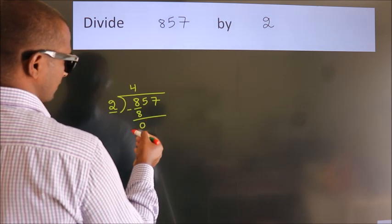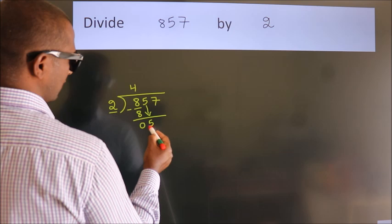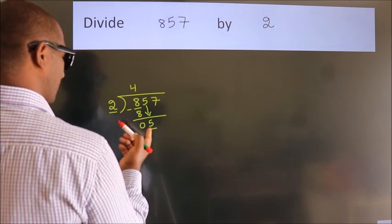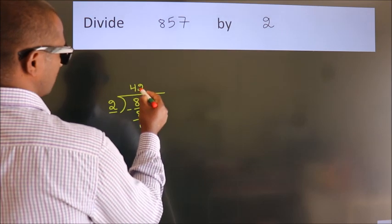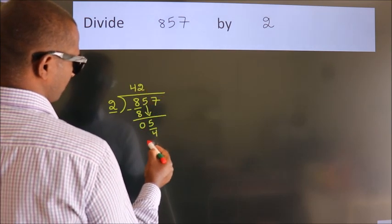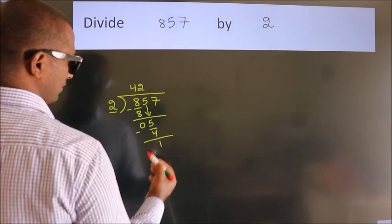After this, bring down the beside number, so 5 down, so 5. A number close to 5 in 2 table is 2 twos, 4. Now we subtract, we get 1.